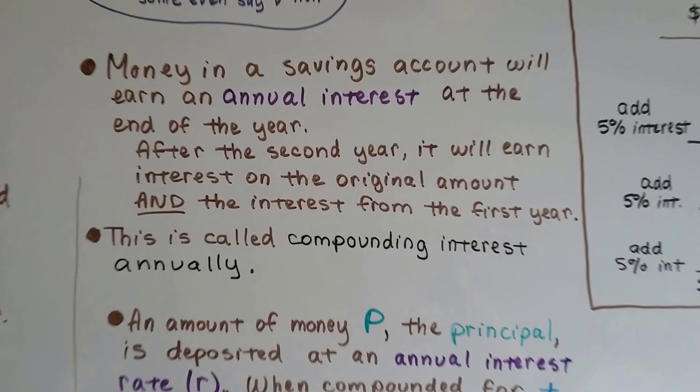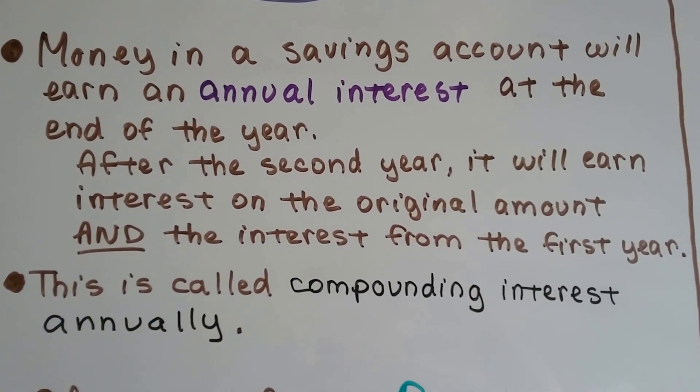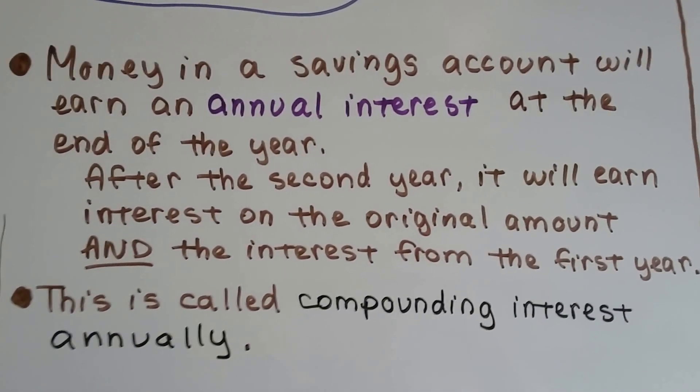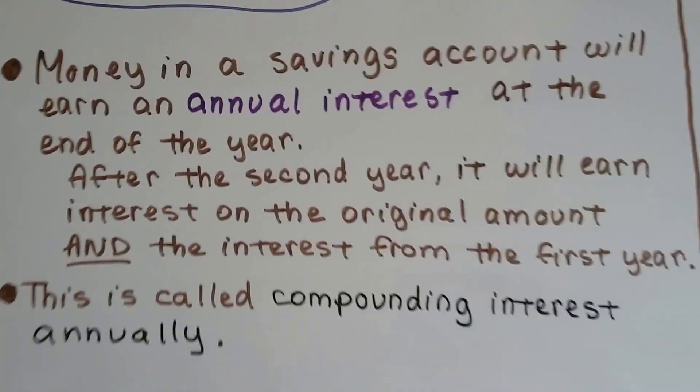Money in a savings account will earn an annual interest at the end of the year. And after the second year, it's going to earn interest on the original amount and the interest from the first year. This is called compounding interest annually.